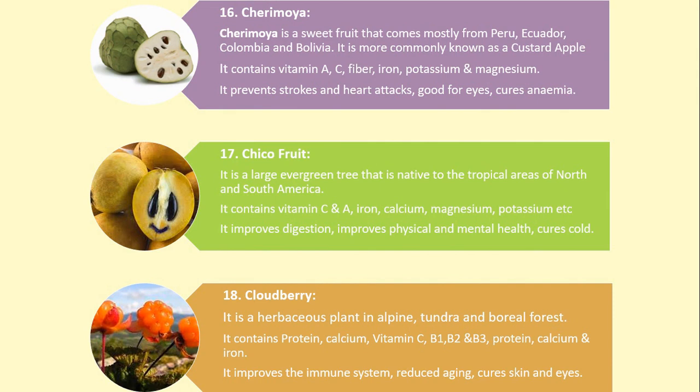Number 16. Cherimoya. Cherimoya is a sweet fruit that comes mostly from Peru, Ecuador, Colombia and Bolivia. It is more commonly known as a custard apple. It contains vitamin A, C, fiber, iron, potassium and magnesium. It prevents strokes and heart attacks and cures anemia.